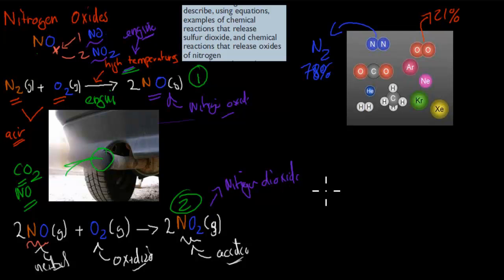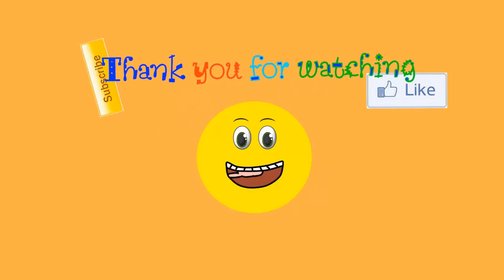The dot point says describe using examples of chemical reactions that release sulfur dioxide and chemical reactions that release oxides of nitrogen. Remember the actual chemical equations, but also remember not just the equations, but what happened. For example, this happens in our actual engines when we combust fuel. Air has N2 and O2 in it, and the high temperatures make some of the N2 and O2 come together to produce nitrogen monoxide. So not just the chemical equation, but be able to describe the actual reaction as well. I hope that was useful. Thank you for watching.